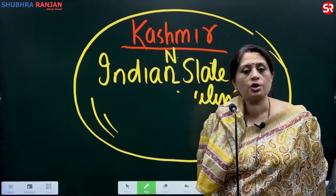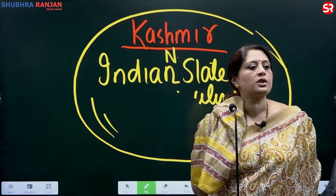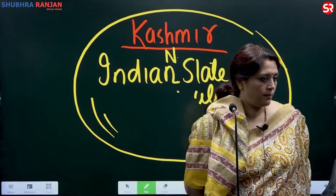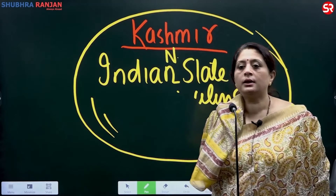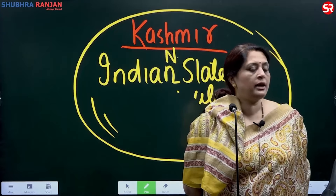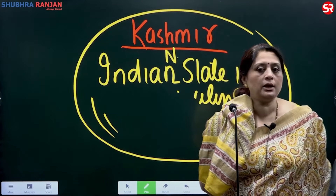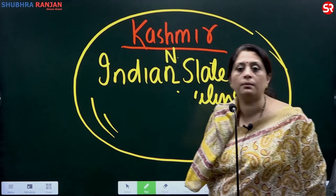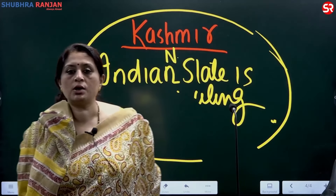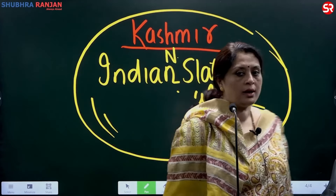The first school of international politics emerged, and that first school is called the school of idealism. Then the school of idealism didn't work — it was found that it is based on some flawed assumptions. So, another school emerged, called the school of realism.